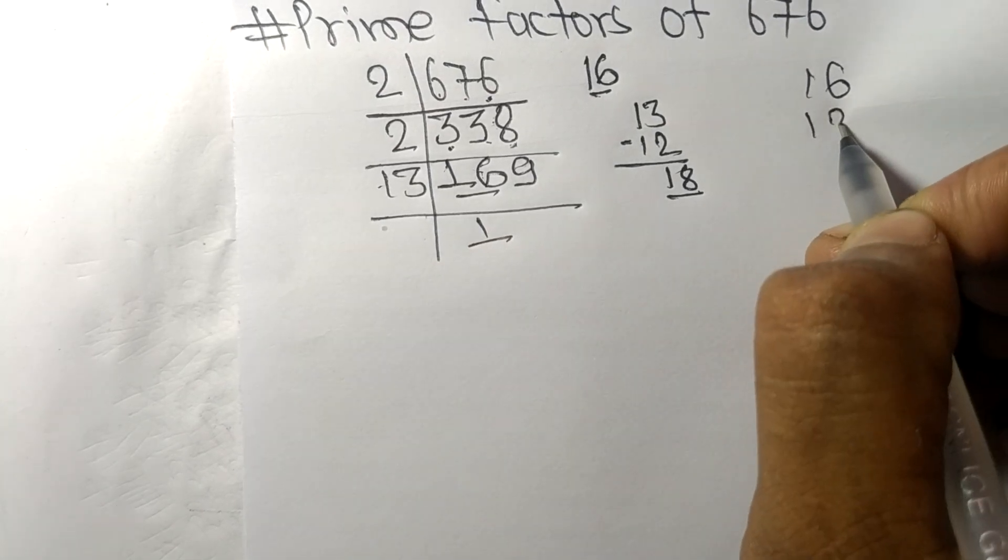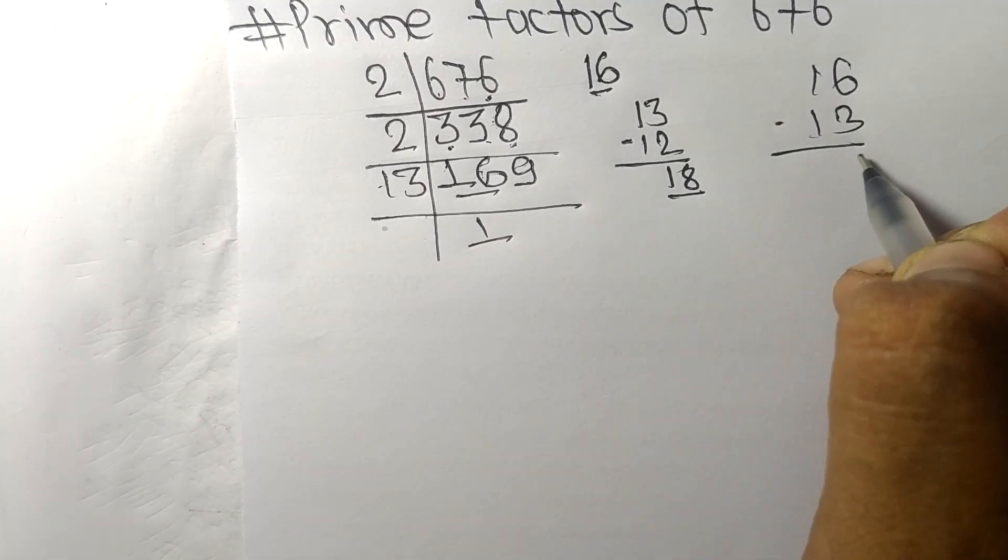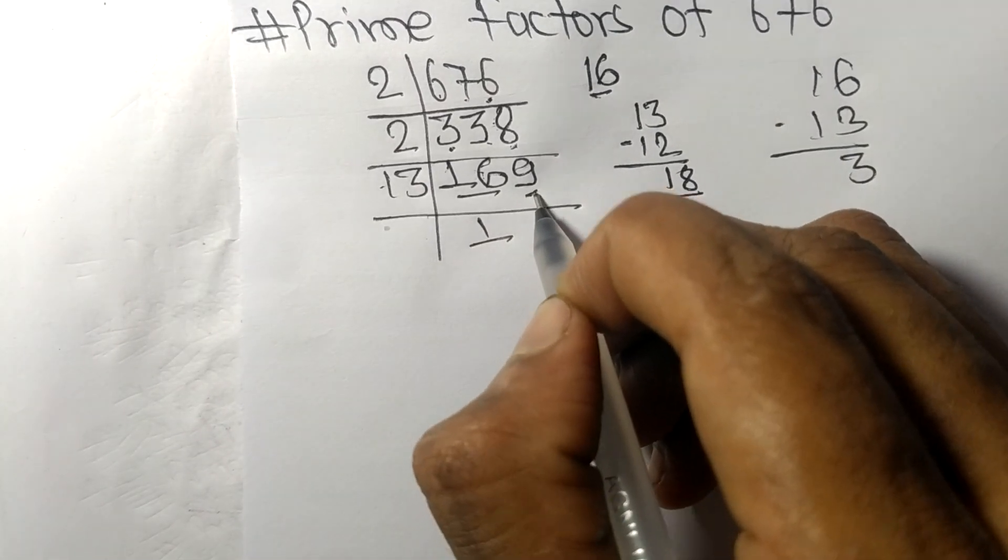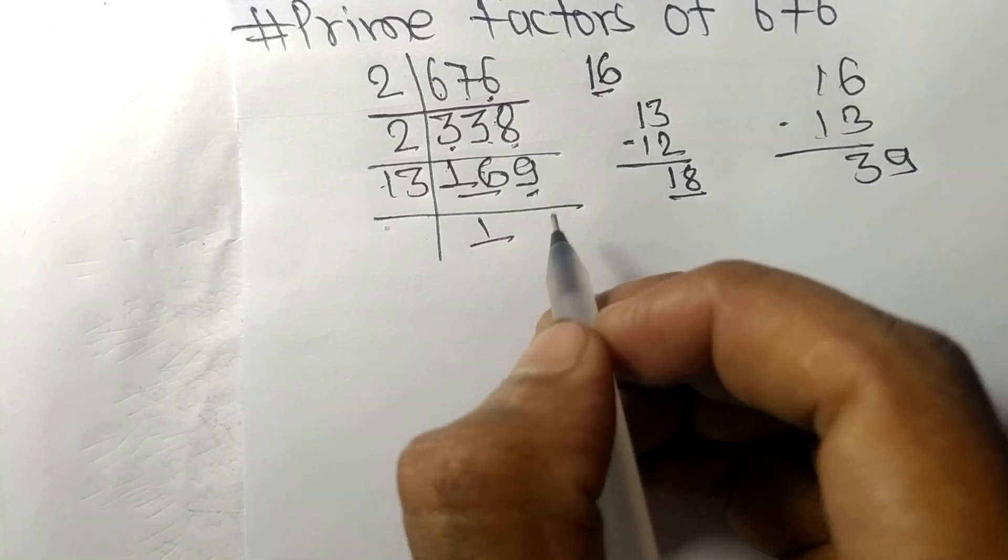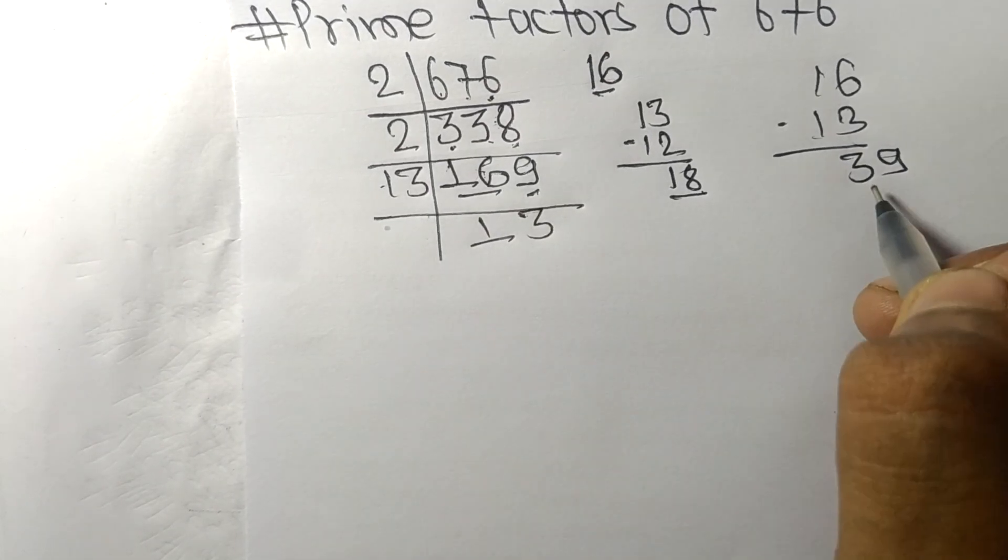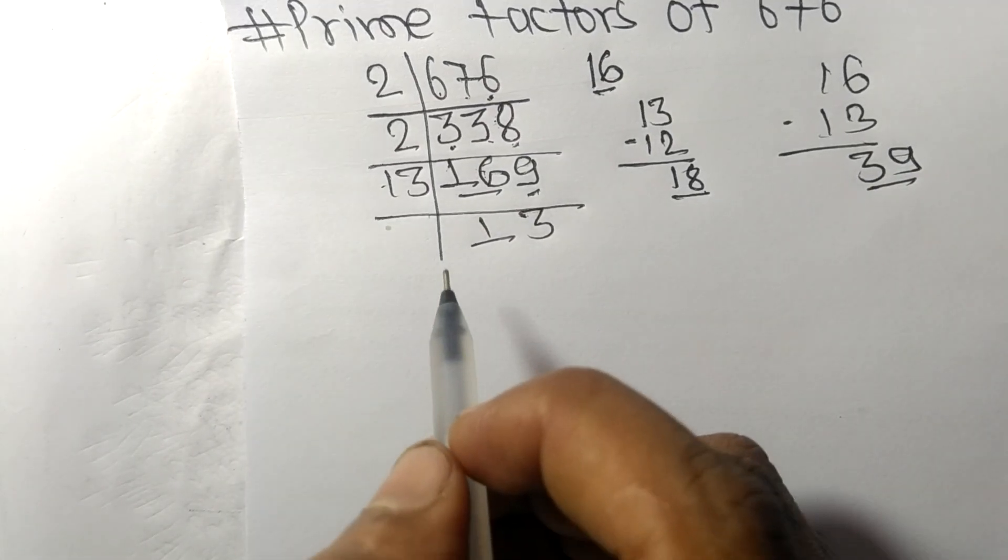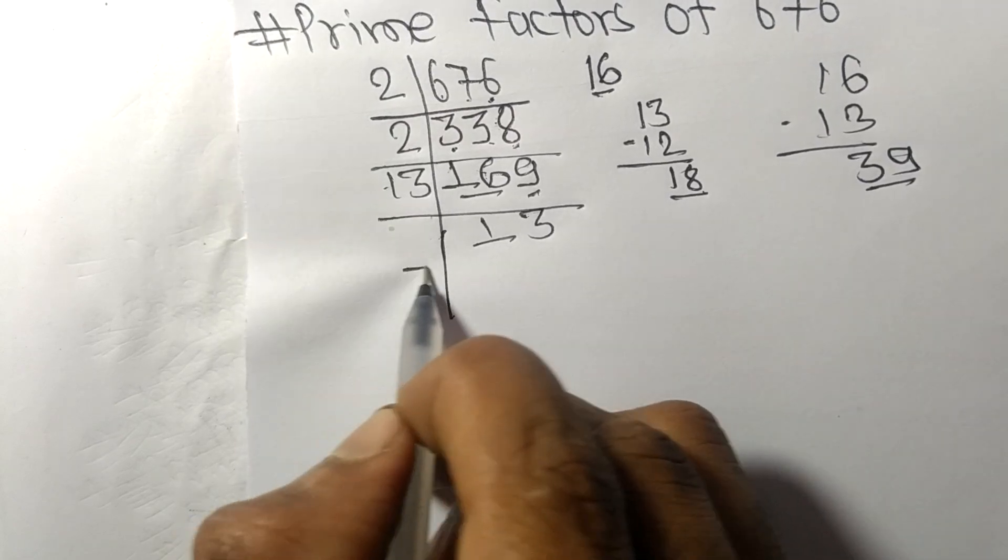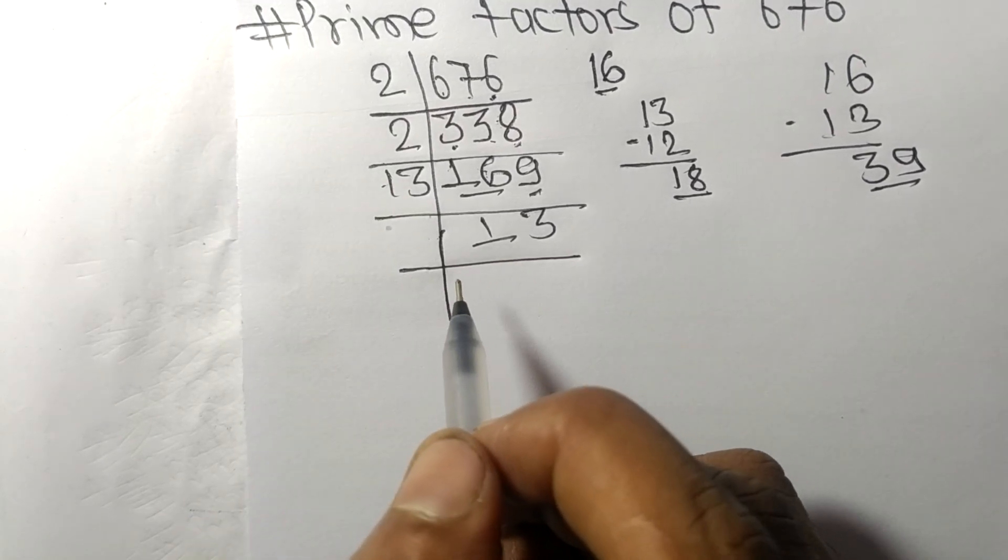13 times 1 equals 13, remainder 3. And then 39, 13 times 3 equals 39. So now we got 13 which is a prime number.